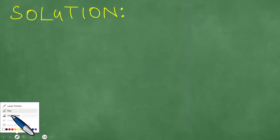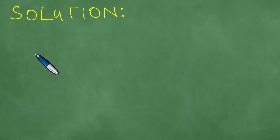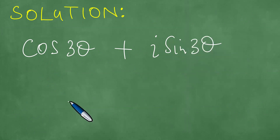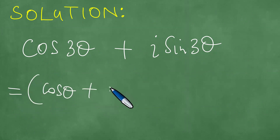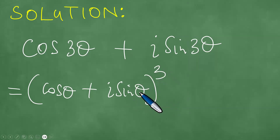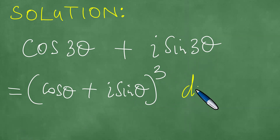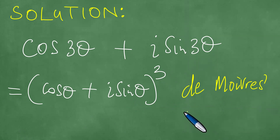To present the actual solution to these, we need to take note of the fact that cos3θ + i·sin3θ is actually equal to (cosθ + i·sinθ)³. This here is what we call De Moivre's theorem.